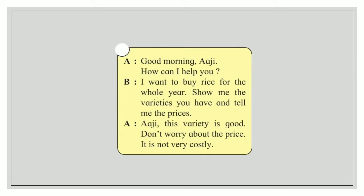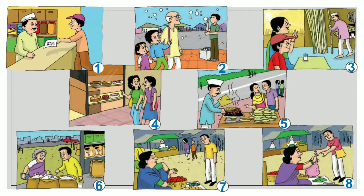First conversation — A: 'Good morning RG, how can I help you?' B: 'I want to buy rice for the whole year. Show me the varieties you have and tell me the prices.' A: 'This variety is good, don't worry about the price, it is not very costly.' Now let us match this conversation to the picture.